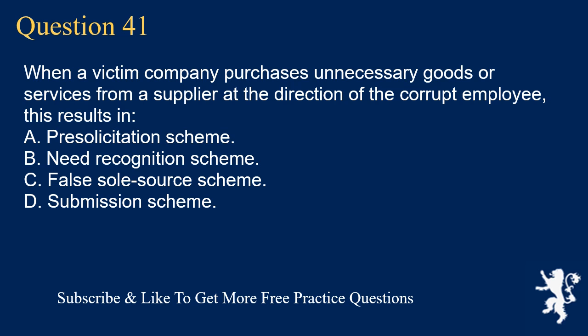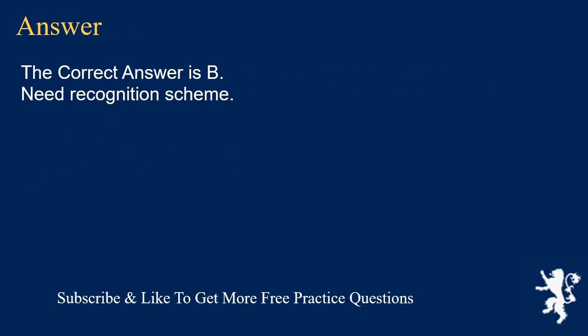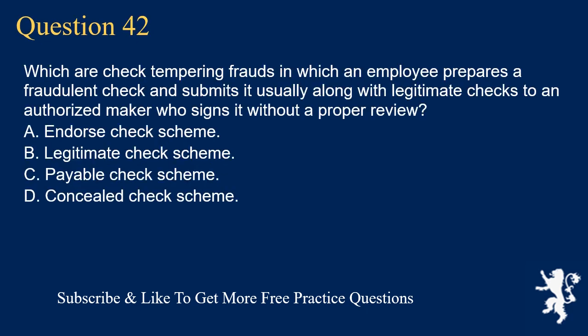Question 41: When a victim company purchases unnecessary goods or services from a supplier at the direction of the corrupt employee, this results in: A. Pre-solicitation scheme. B. Need recognition scheme. C. False sole source scheme. D. Submission scheme. The correct answer is B. Need recognition scheme.